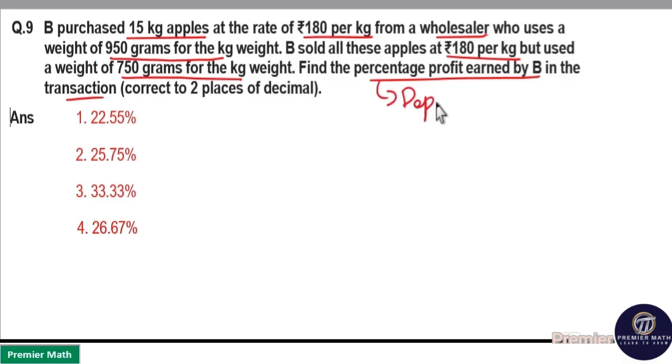Here percentage of profit directly depends on the weight. He bought apples at 190 per kilogram and sold it at 180 per kilogram.